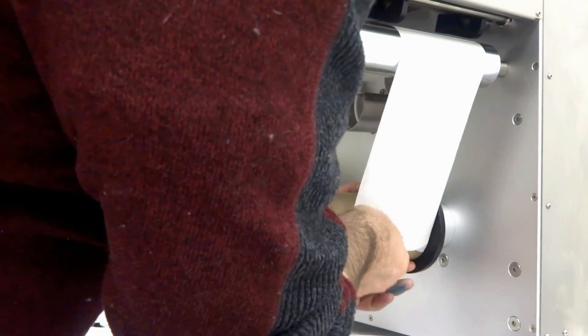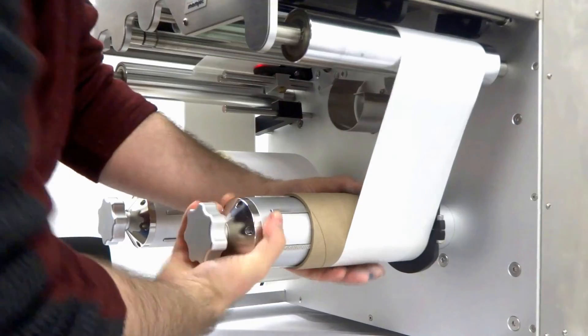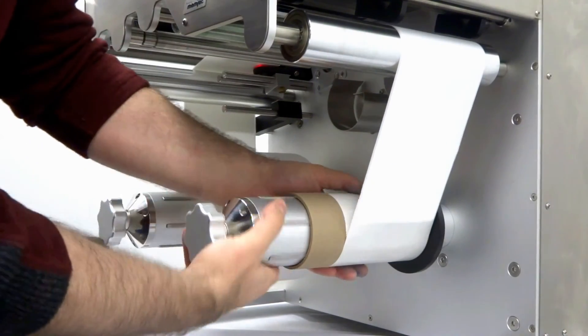Tape the lead edge to the core and give it one wind to ensure it won't slip off the core when applying tension.